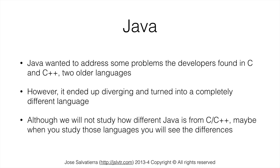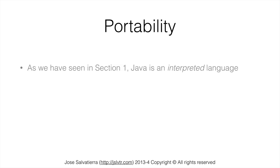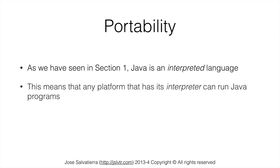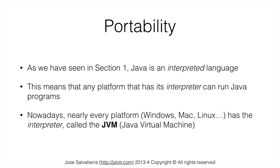Although we will not study how different Java is from C or C++, when you study these two languages, if you ever do, you will see the differences quite quickly. Java is an interpreted language, and this means that any platform that has the interpreter we've talked about can run Java programs. This is one of the strengths of Java. Nowadays, nearly every platform — Windows, Mac, Linux, Android, televisions, and servers — has this interpreter, which is called JVM, or Java Virtual Machine.